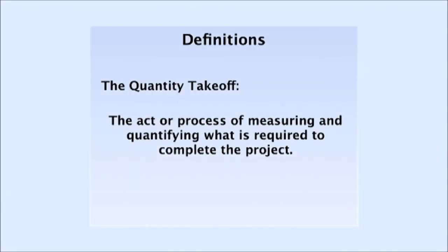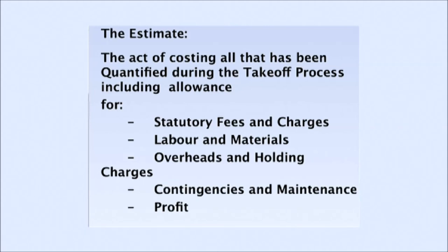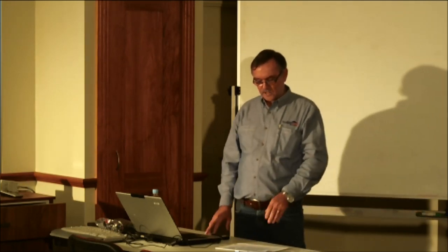I'll give you a brief definition of what I'm talking about when I speak of quantity takeoff and estimating. This is where we break our estimate into two parts. The quantity takeoff part is to do with the taking off of all of the materials required for the job. It's the act or process of measuring and quantifying what is required to complete the project - everything that's in that project. The estimate is the act of costing all that had been quantified during the takeoff process, including the costing of statutory fees and charges, labour and materials, overheads and holding charges, contingencies, maintenance and profit. If it's got to be costed, it has to be taken off. Don't leave it to memory. A house consists of more than just labour and materials. You have to take into consideration all of the things relating to that particular job.